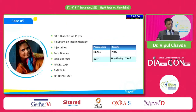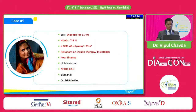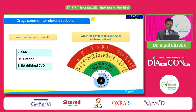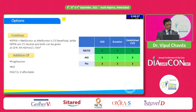Additional options for Case 4 include pioglitazone and GLP-1 RA. Case 5: a 58-year-old female, 11 years of diabetes, reluctant on insulin and injectables, poor financial background, normal lipids, non-proliferative diabetic retinopathy, established coronary artery disease, BMI 24, already on DPP4 inhibitor with metformin, A1C 7.9, eGFR 49 ml/min/BSA. Key factors: duration of diabetes, high glycemic load, reduced eGFR, reluctance to inject, poor finance, retinopathy. Options: SGLT2 inhibitor, AGI, and pioglitazone. We must continue DPP4 plus metformin — metformin is CV-beneficial and DPP4 is CV-neutral and can be given at reduced eGFR. Additional use of pioglitazone, AGI, and SGLT2 inhibitor can be planned according to her financial status.